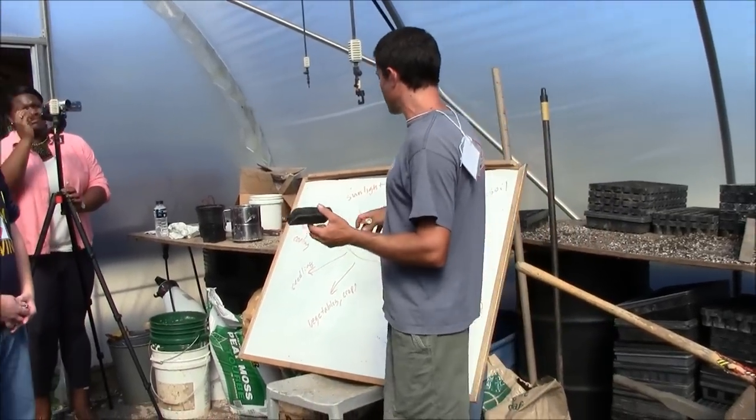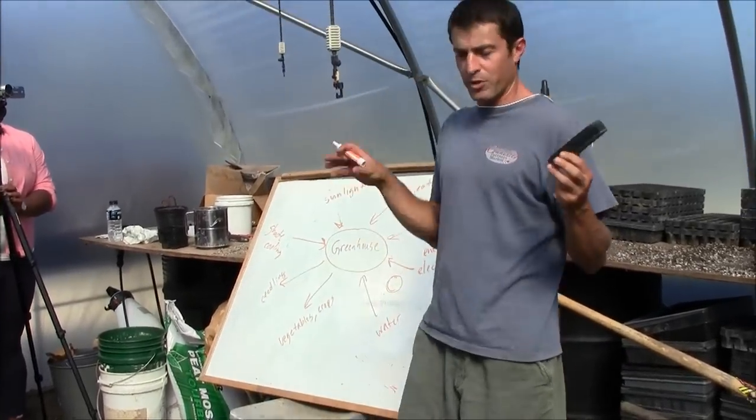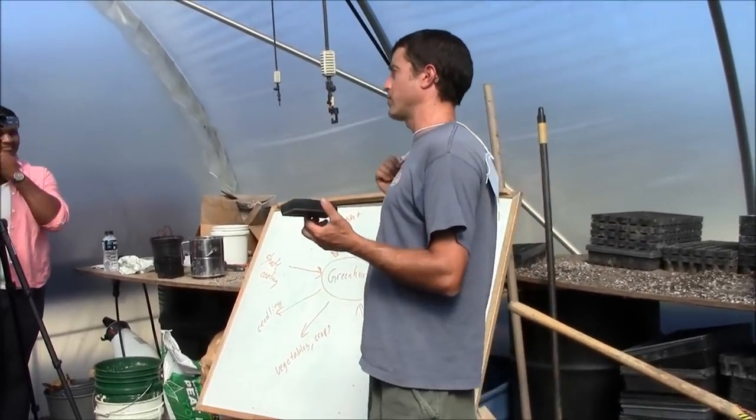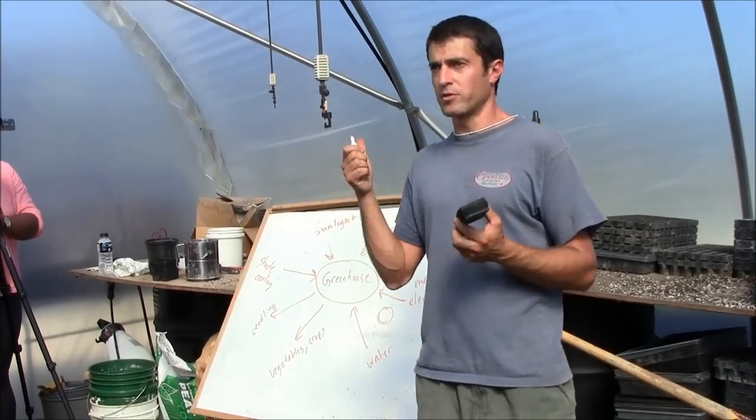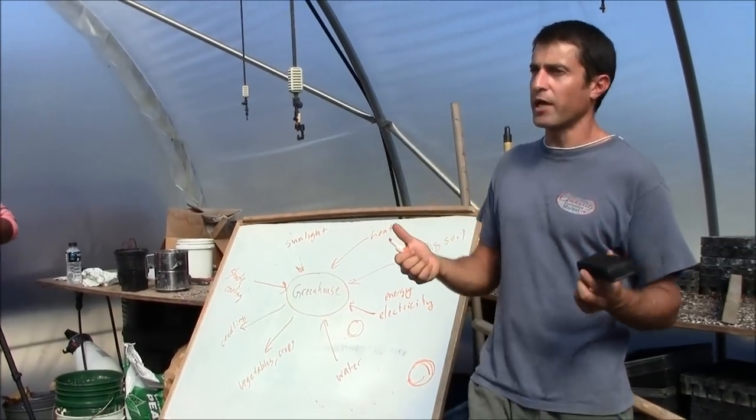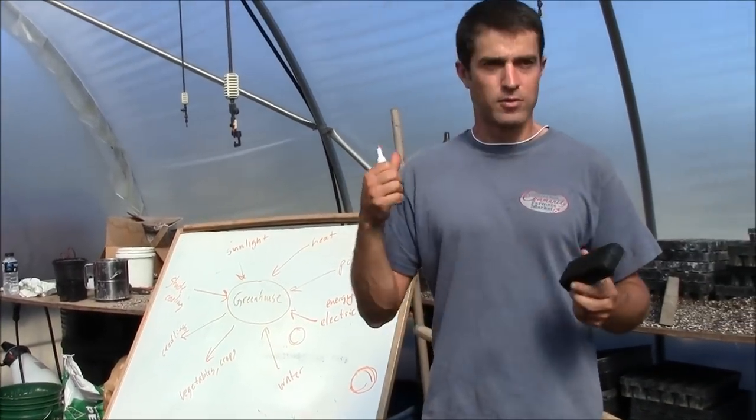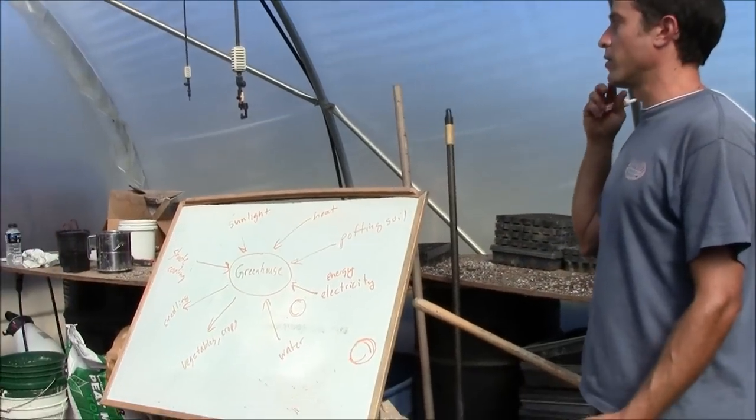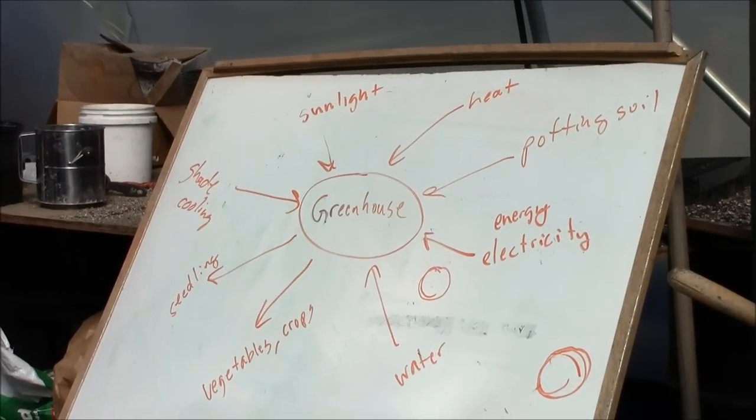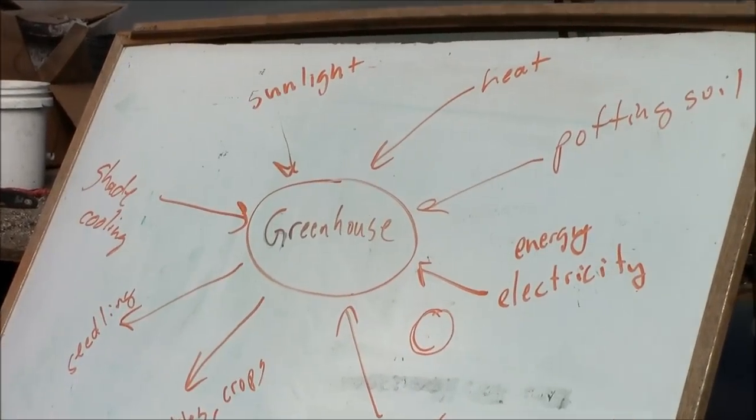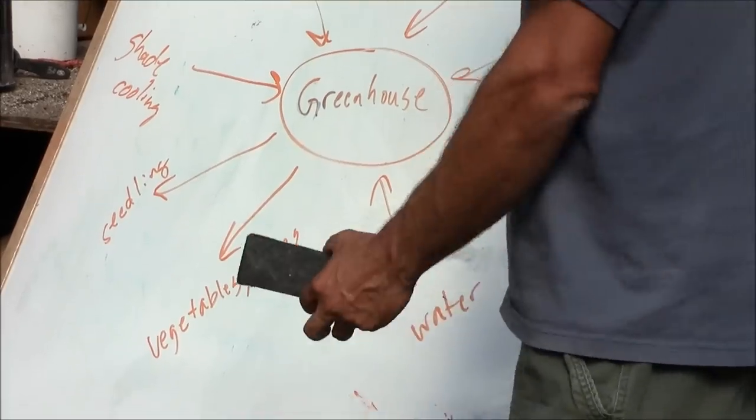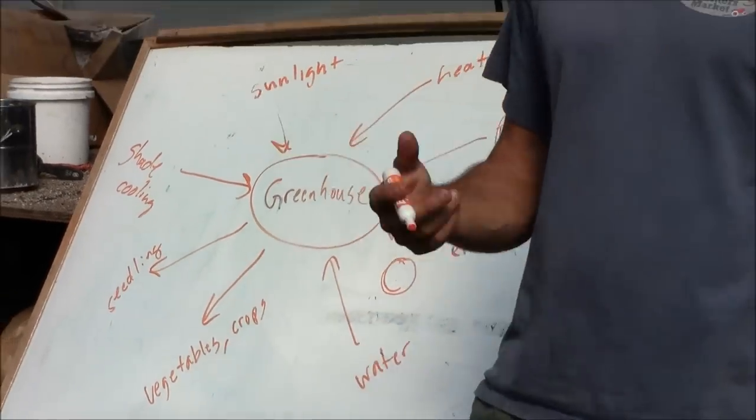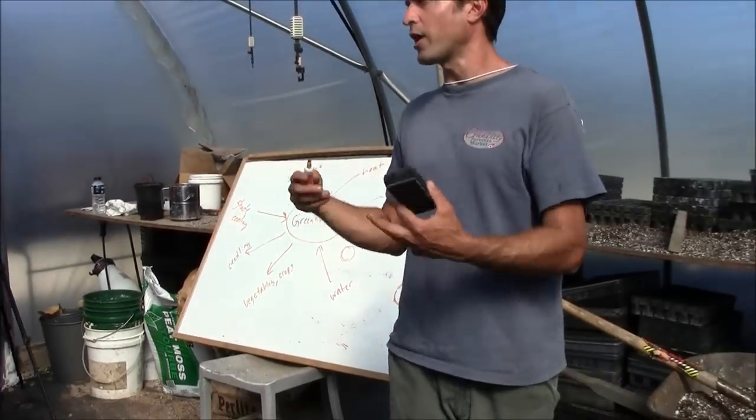You start off by drawing a map of all the different components on your farm. So you might have post harvest, cooler, tool shed, greenhouses, roads, ponds, market sheds. So you have all these different components, and you write those down and try to figure out all the inputs and outputs that each of those components requires.